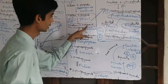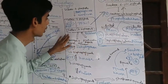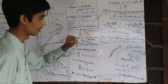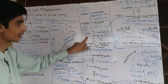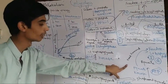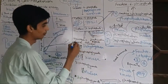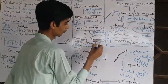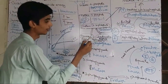Next, fructose 1,6-bisphosphate is cleaved by aldolase into glyceraldehyde 3-phosphate and dihydroxyacetone phosphate — a reversible step. Dihydroxyacetone phosphate is then converted into glyceraldehyde 3-phosphate by the enzyme isomerase.